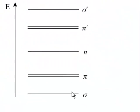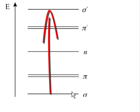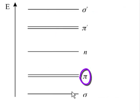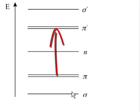The sigma orbital has the largest stabilisation, which is associated with the degree of overlap, and the sigma-starred has the largest energy gain on formation. For a sigma-to-sigma-starred transition, it's going to be a very high-energy transition. The pi orbitals are somewhat less stabilised than the sigma orbitals, and correspondingly the pi-star orbitals are less unstable, so the transition between them is of lower energy than the sigma-to-sigma-star.